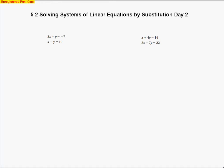This is the tutorial for Chapter 5, Section 2: Solving Systems of Linear Equations by Substitution, Day 2. Let's take a look at our first problem. We've got 2x plus y equals negative 7, and x minus y equals 10. I don't have a variable by itself, so I'm going to go ahead and isolate one of the variables. I'm going to solve for x in this equation.